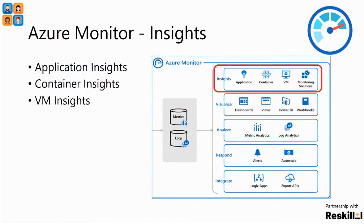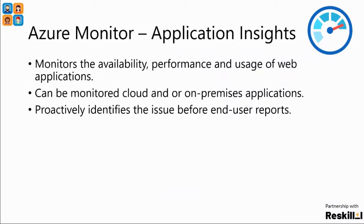Once we collect the data, we can generate insights. There are three different categories of insights: application insights, container insights, and virtual machine insights. Application Insights is used to analyze availability, performance, and usage of a web application. It can be used to monitor both cloud and on-premises applications. It basically identifies issues before someone reports them to the administrator — so we can proactively identify and fix issues rather than waiting for someone to report that the application has been down for an hour.